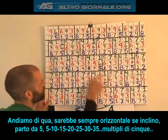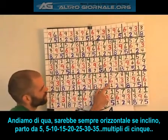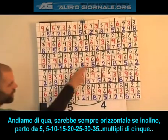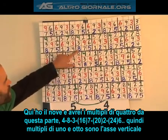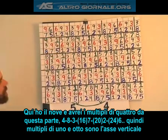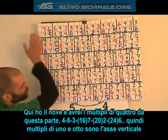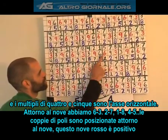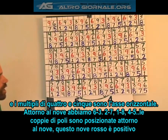Going horizontally, if I start with 5, I have multiples of 5: 5, 10, 15, 20, 25, 30, 35. Again, there's my 9. I must then have multiples of 4 going the other way: 4, 8, 12 (which is 3), 16 (7), 20 (2), 24, and 6. So multiples of 1 and 8 are my vertical axis; multiples of 4 and 5 are my horizontal axis — everything around this 9. I have 6 and 3, 2 and 7, 1 and 8, 4 and 5 — all the polar number pairs positioned around my 9. This red 9 is a positive 9.